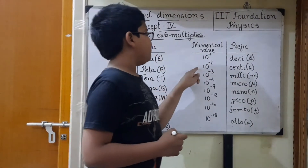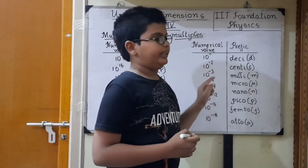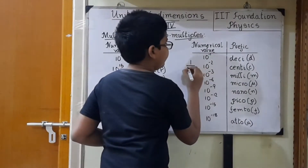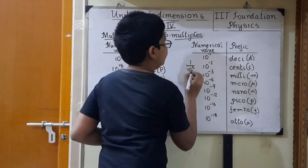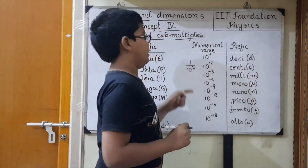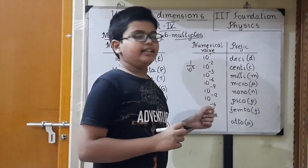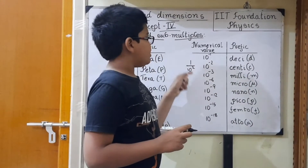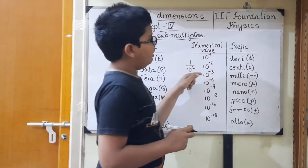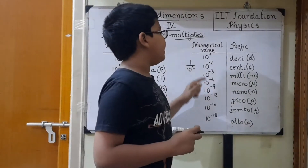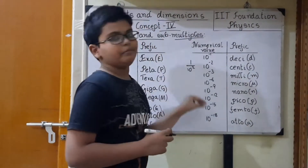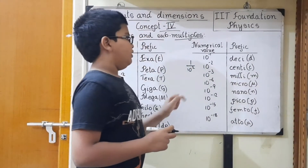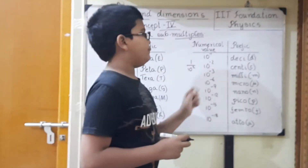10 power minus 2 meters — 10 power minus 2 is 1 by 10 power 2, which is 1 by 100. So 10 power minus 2 meters equals 1 centimeter, which means 1 by 100 meter. And 10 power minus 3 means 1 by 10 power 3, which is 1 by 1000, equals 1 millimeter. So 10 power minus 3 meters equals 1 millimeter.